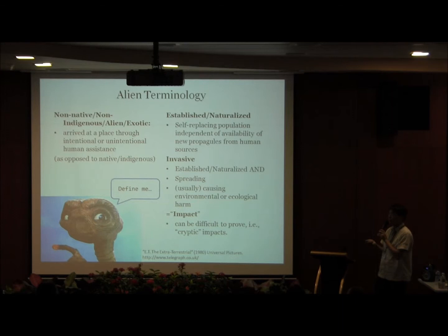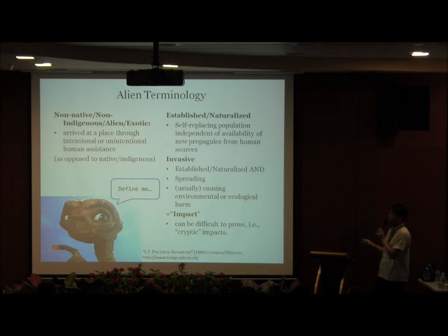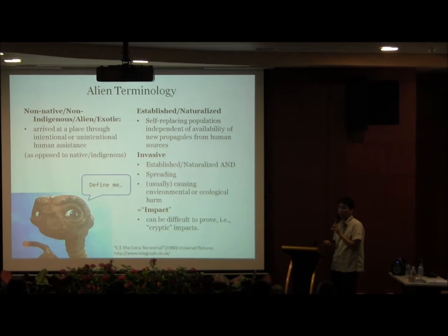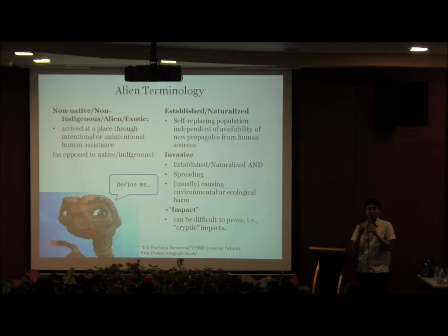Not all non-native species will survive — some will die out. But others can disperse into the wild and sustain populations independently of human introduction. If a non-native species establishes itself in the wild and can replace its population independently, it is known as established or, for plants, naturalized. Being established is the prerequisite for calling a species invasive. It has to maintain its population before it becomes a problem. We also came to realize that invasive species must cause some form of harm — ecologically or economically — and impact is actually quite difficult to define, measure, and prove.